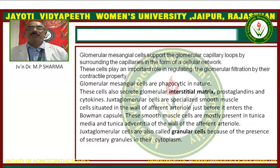Juxtaglomerular cells are specialized smooth muscle cells situated in the wall of the afferent arteriole just before it enters the Bowman's capsule. These smooth muscle cells are mostly present in the tunica media and tunica adventitia of the wall of the afferent arteriole. Juxtaglomerular cells are also called granular cells because of the presence of secretory granules in their cytoplasm.